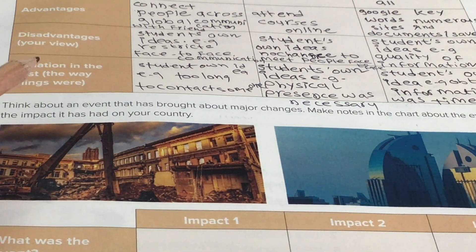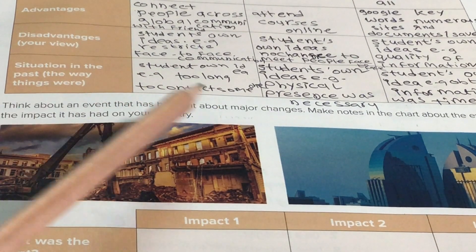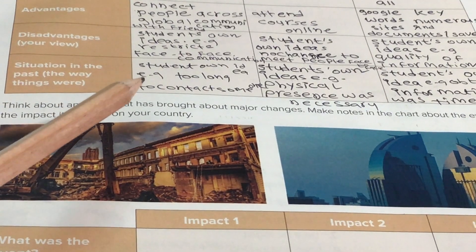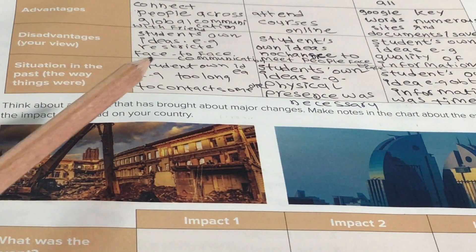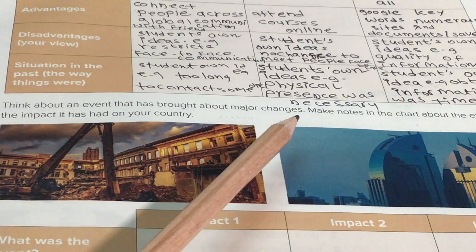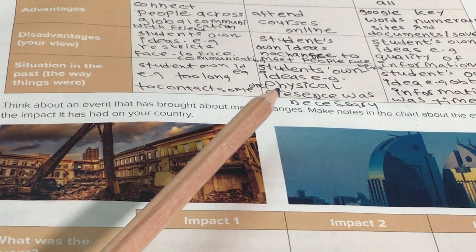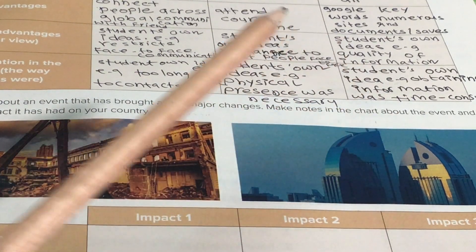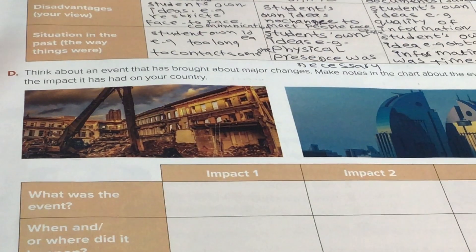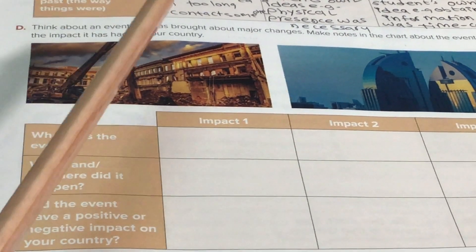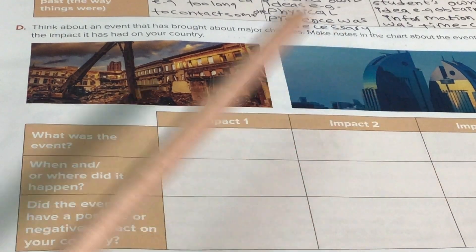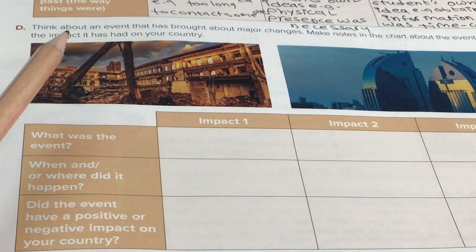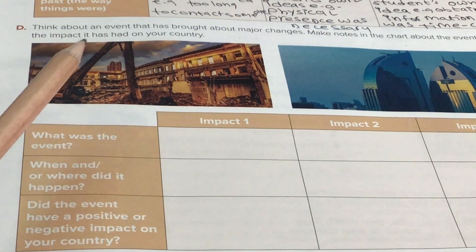Was the situation in the past - كيف كانت الأمور في الماضي؟ Students' own ideas: too long to connect someone - كان يصعب الوصول إلى شخص معين ويأخذ وقتاً طويلاً. Physical presence was necessary - كان وجود الشخص شخصياً ضرورياً. Obtaining information was time-consuming - أخذ المعلومات كان جهداً ووقتاً. Think about an event that has brought about major changes - make notes in the chart about the event and the impact it has had on your country.